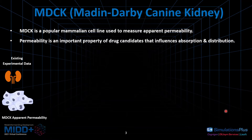I feel very happy and grateful to be part of this wonderful Cheminformatics team. The project I was recently working on is the MDCK project — Madin-Darby Canine Kidney. It's a very popular and commonly used mammalian cell line extracted from dog kidneys to measure apparent permeability. Permeability is an important trait of drug candidates that has a big influence on absorption and distribution.